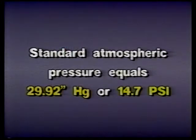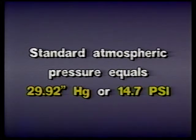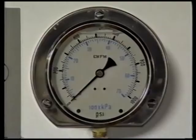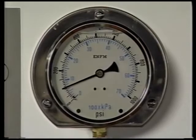Atmospheric pressure can be stated either in inches of mercury, using the letters Hg — the chemical notation for mercury — or in pounds per square inch, which is usually shortened to PSI.